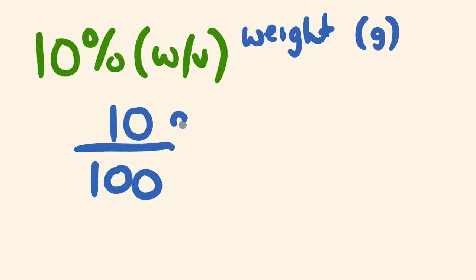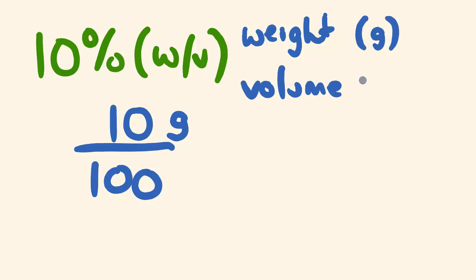So this is 10 grams out of 100 — and this is where the V part comes in. The V stands for volume, and the volume is given in mils. So this is 10 grams per 100 mils, and that's pretty much what these mean.